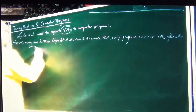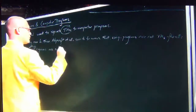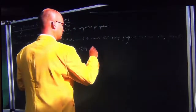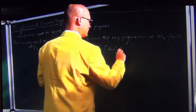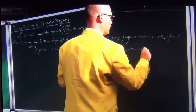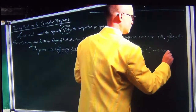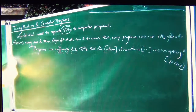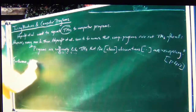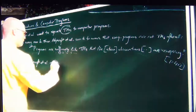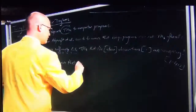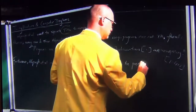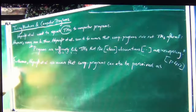However, every now and then, Hopcroft et al. fortunately do seem to be aware that computer programs are not Turing machines after all, because they write: 'programs are sufficiently like Turing machines that the above observations are unsurprising.' So that is, in retrospect, unfortunate again — that they make this conflation.